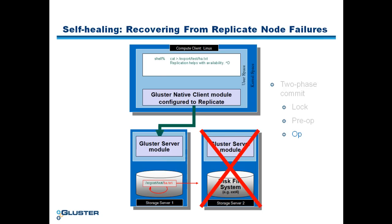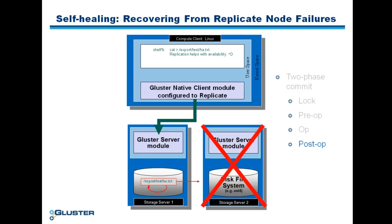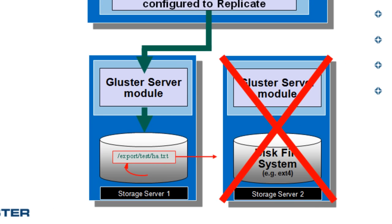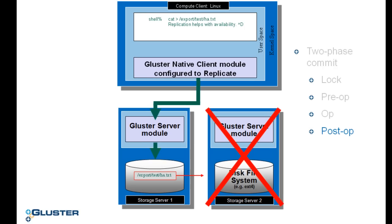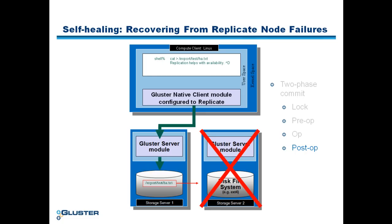Next, the file data will be written to disk during the op phase. Subsequently, the client will execute the post-op. During this operation, the change logs for those operations that have completed successfully will be cleared. In our example, the self-pending change log will be cleared on server 1. The file is then unlocked and the file write operation under this fault condition is complete.